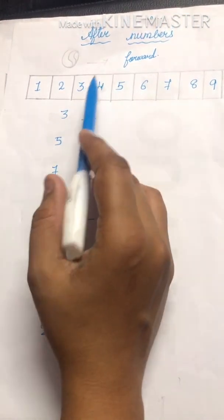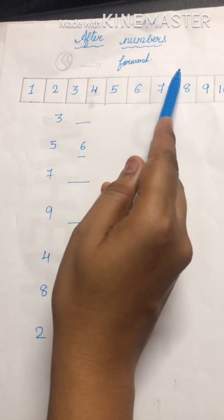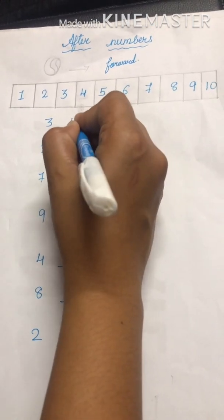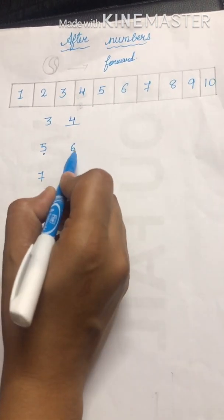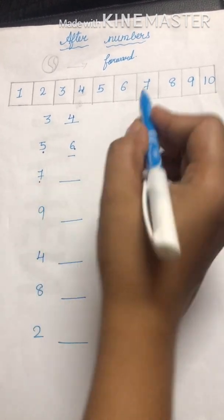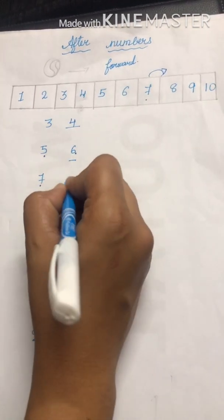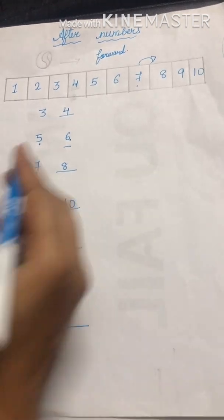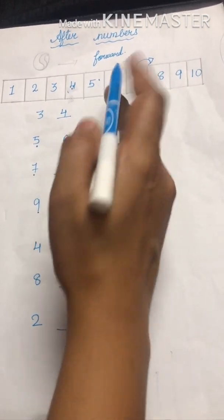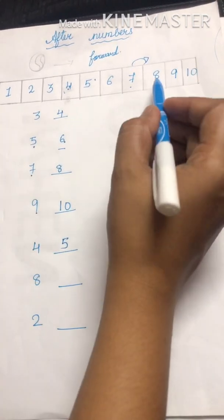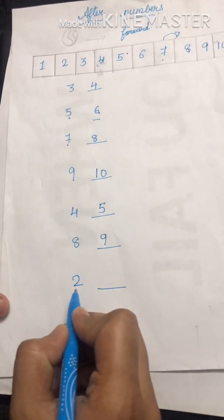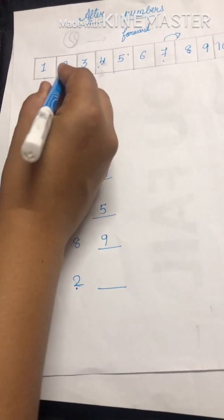Same as that, after number also, we can do it this way. After number: when the ball moves forward — one number forward from 3, we get 4. One number forward from 5, we get 6. One number forward from 7, we get 8. One number forward from 9, we get 10. One number forward from 4, we get 5. One number forward from 8, we get 9. One number forward from 2, we get 3.